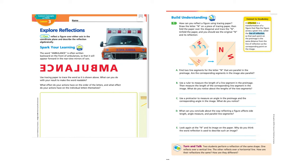B: Use a ruler to measure the length of a line segment in the pre-image. Then measure the length of the corresponding line segment in the image. What do you notice about the length of the two segments? In all of these questions, they're comparing the pre-image with the image, the corresponding parts that you're looking at. C: Measure an angle in the pre-image and the corresponding angle in the image. What do you notice?